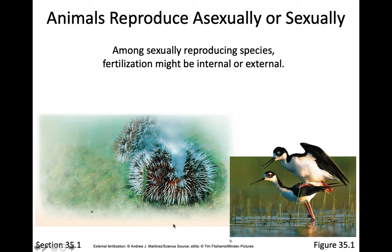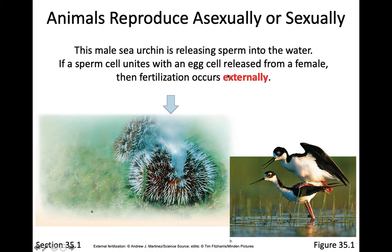Sexual reproduction can occur in two different ways: internal fertilization or external fertilization. Organisms that use external fertilization — like sea urchins and sponges — often can't easily move or have difficulty mating directly. They may be stuck to the ground or move very slowly, making it hard to unite their reproductive organs. These are the types of organisms that often rely on external fertilization.